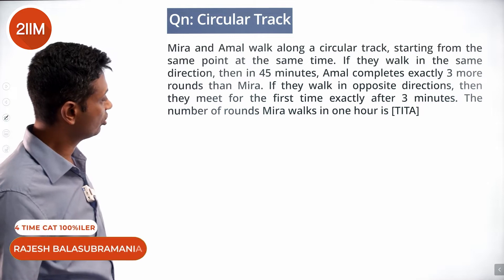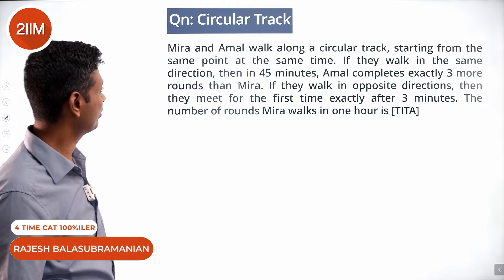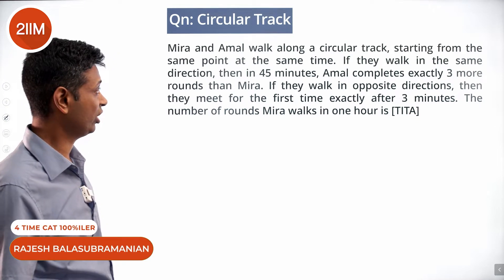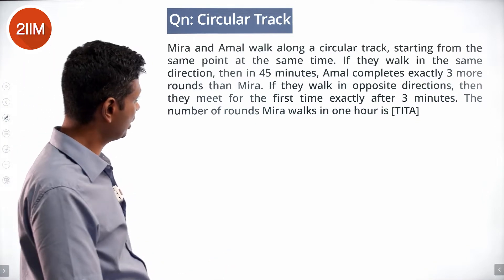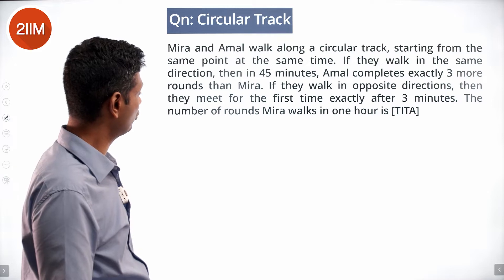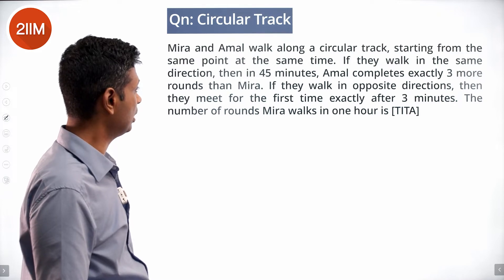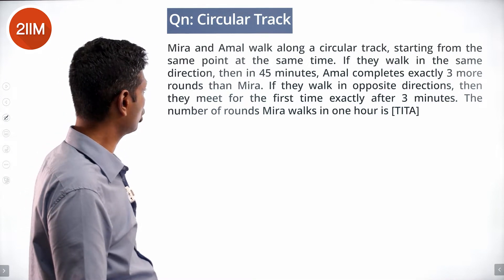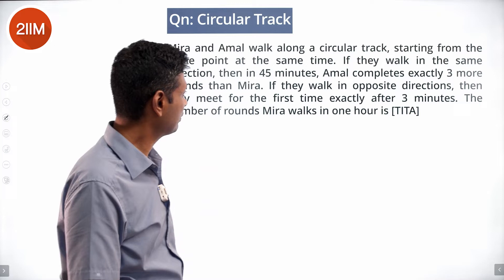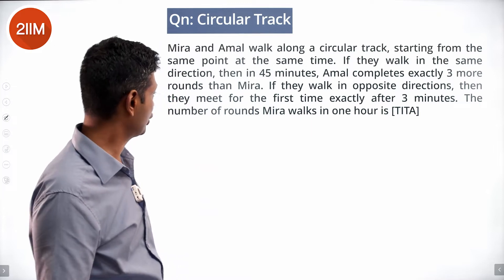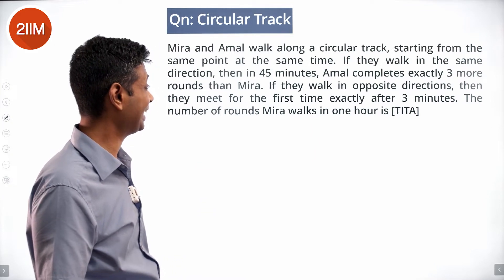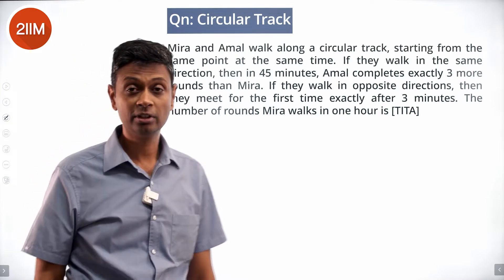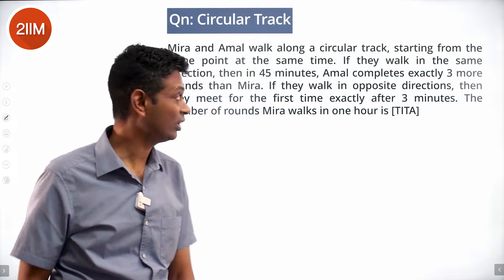Meera and Amal walk along a circular track starting from the same point at the same time, walking in the same direction. In 45 minutes, Amal completes exactly three more rounds than Meera. If they walk in opposite directions, they meet for the first time exactly after three minutes. I was tripped up by this a little bit.